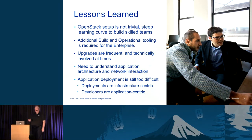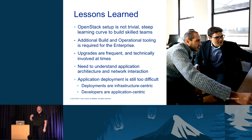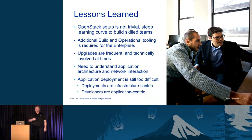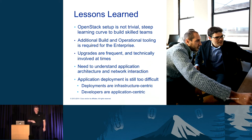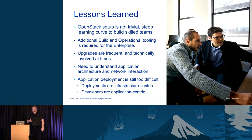What did we learn while deploying applications in OpenStack? First of all, running an OpenStack infrastructure is not trivial — there is a steep learning curve to build skilled teams. We discovered that we needed to provide additional build and operational tooling in the enterprise to support OpenStack Cloud infrastructure. The update cycle is very fast: every six months there's a new version of OpenStack, and we have to plan for these upgrades. We got a little bit behind, but we're catching up. More importantly, we needed to understand the interactions between the application, the network, and the infrastructure, and work with application architects to classify their applications and help them write cloud-native applications. We also discovered that application deployments are still too difficult — developers are application-centric, but the deployments are infrastructure-centric, and so we tried to figure out ways to solve that problem.